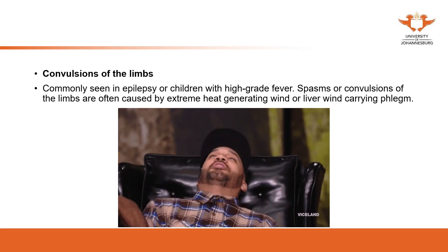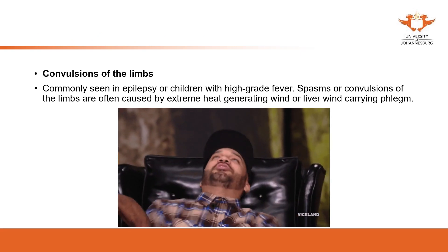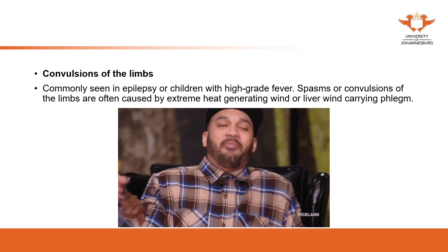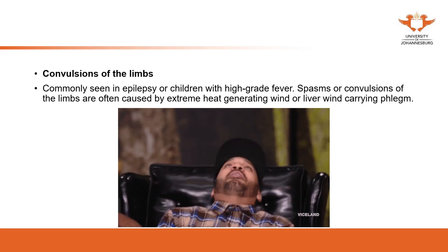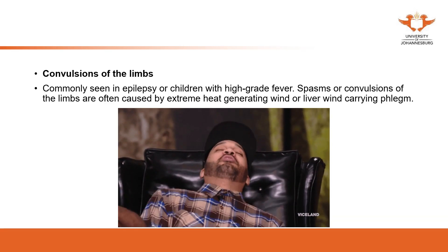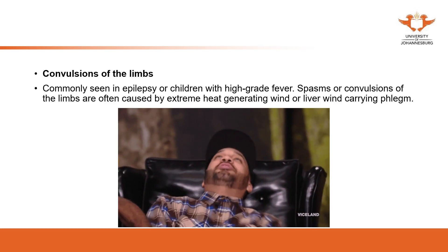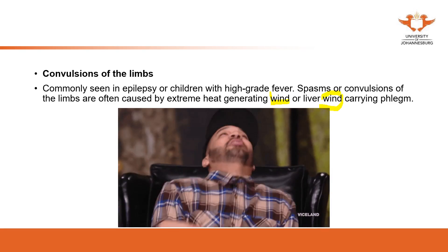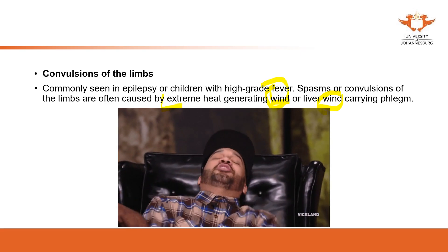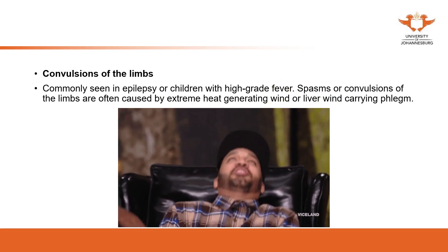Convulsion of limbs — as seen in the image, this is demonstrated acting. Convulsion is seen in epilepsy or children with high-grade fever. The spasm of the extremities is also a kind of movement. Since the body is shaking, shaking is movement, and that's why it's associated with generating wind. Here we give two options: extreme heat or liver wind, though in clinical practice other causes are also possible.